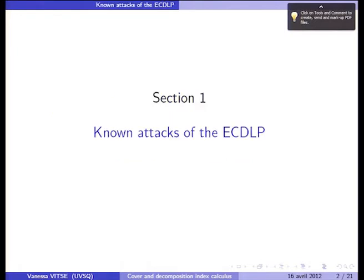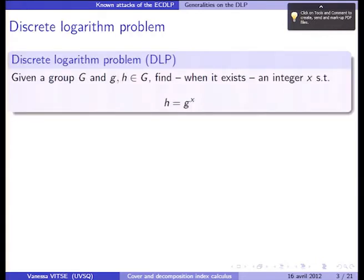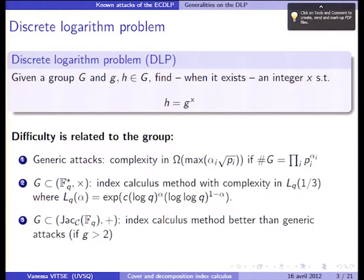Let me begin with some reminding facts about the ECDLP and the major existing attacks. The definition of the DLP is the following: you are given a group G and two elements G and H in this group, and the goal is to find an integer X such that H equals G to the X. The difficulty of this problem is related to the group G; without additional information, you can perform a generic attack treating the group law as a black box, and the best complexity you can achieve is at least the square root of the size of G.